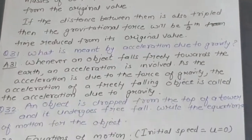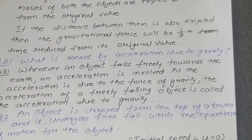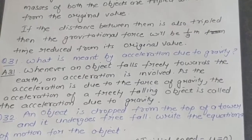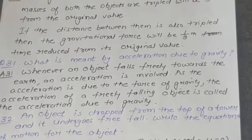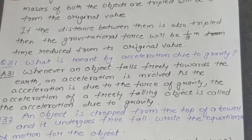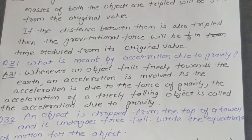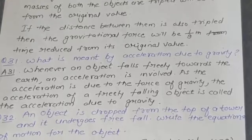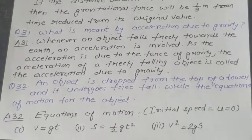Question 31: What is meant by acceleration due to gravity? Answer: Whenever an object falls freely towards the earth, an acceleration is involved. As this acceleration is due to the force of gravity, the acceleration of a freely falling object is called the acceleration due to gravity.